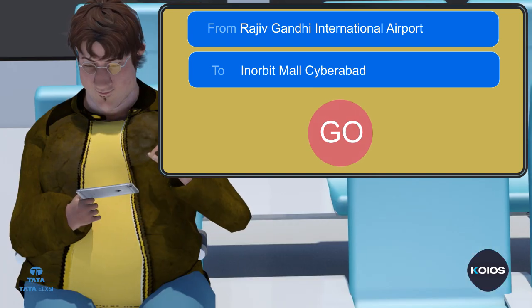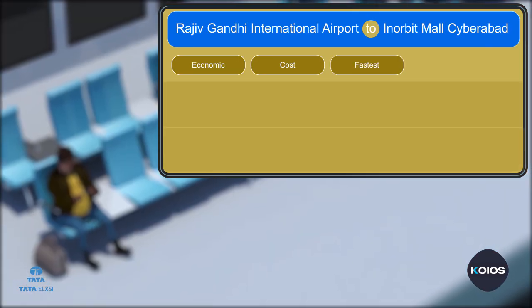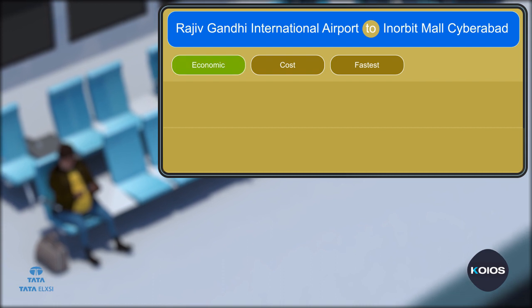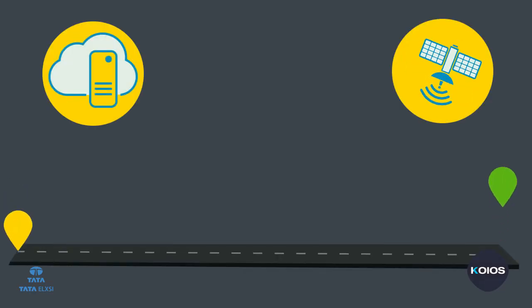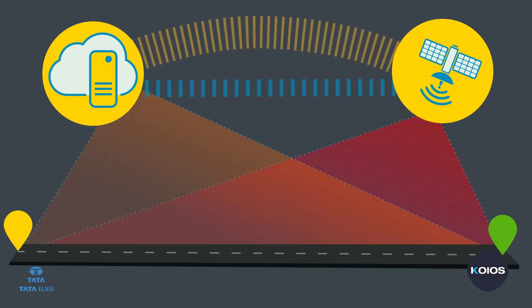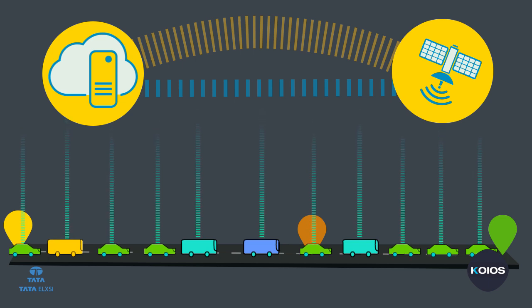Once you enter the starting point and destination, the app will analyze the whole route and divide it into different clusters. AI running on the server will suggest multiple modes of transport based on several parameters, mainly the arriving time of the passenger and availability of the fleet vehicle.